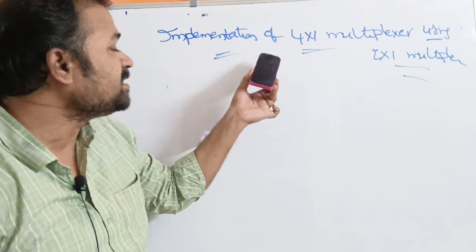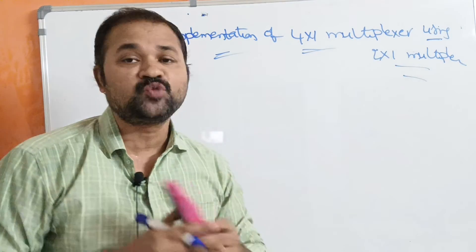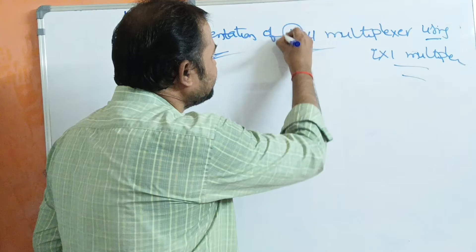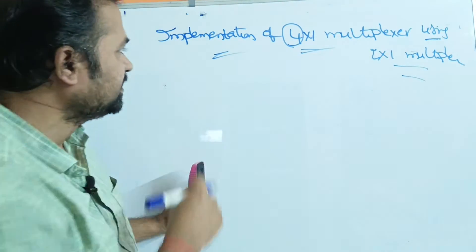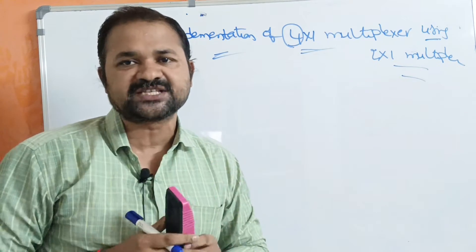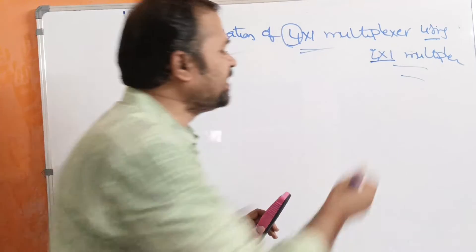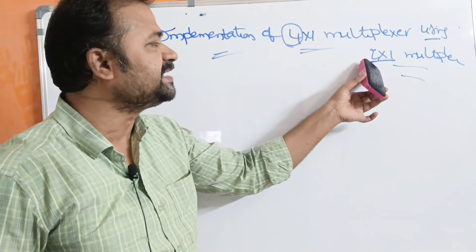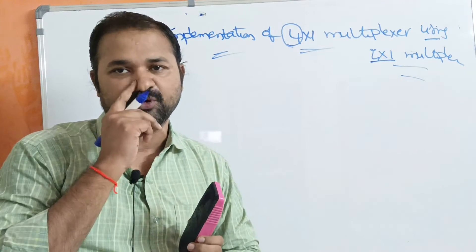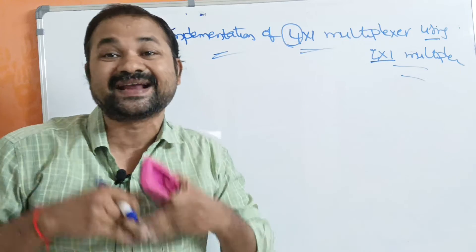Let us discuss the implementation of a 4 by 1 multiplexer using 2 by 1 multiplexers. The required multiplexer is a 4 by 1 multiplexer, which has 4 inputs and produces 1 output. The available multiplexer is a 2 by 1 multiplexer, which has 2 inputs and produces 1 output. First, we have to find out how many 2 by 1 multiplexers are required.